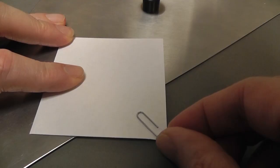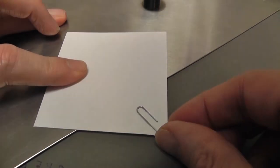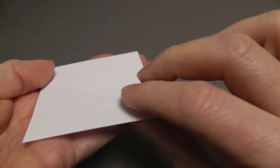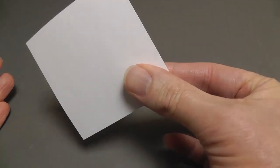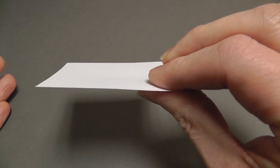Make sure the paper clip is all the way on the square and lined up to the diagonal of the square. Hold the paper clip between your thumb and one finger that just cover up the paper clip, like this.